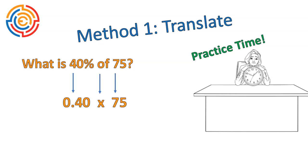All right, we convert like that, 0.4 or 0.40. Of means multiply, 75 means 75. When you plug that into a calculator, you get 30. So 40% of 75 is 30.